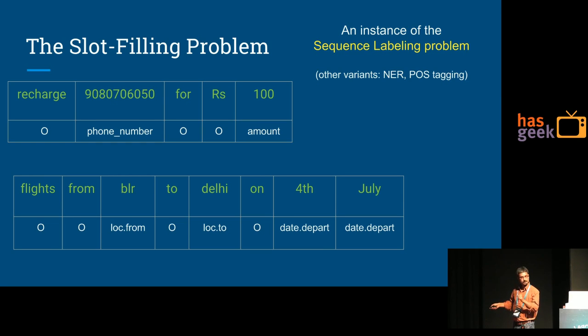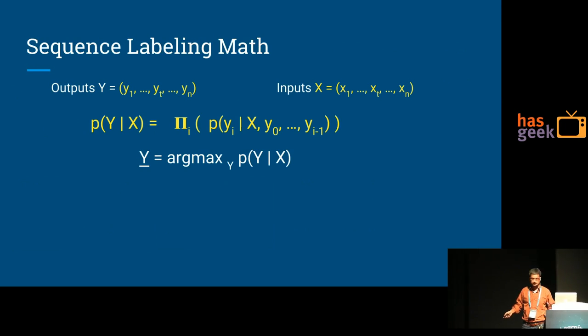Essentially you get the sentence, you label it, and you extract the labels and the corresponding values. Here there are contiguous labels so you extract both of them and fill it. People who are familiar with part of speech tagging or named entity recognition have seen variants of this problem.